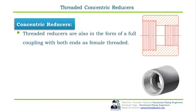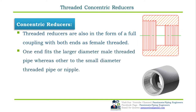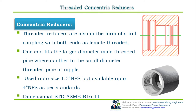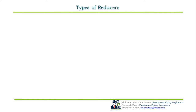Threaded concentric reducers are also in the form of a full coupling with both ends as female threads. One end fits the large diameter threaded pipe whereas the other fits the small diameter threaded pipe or nipple. Threaded concentric reducers are usually up to 1.5-inch NPS but also available up to 4-inch NPS. The dimensional standard for threaded concentric reducers is ASME B16.11.